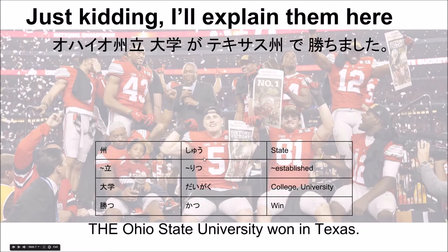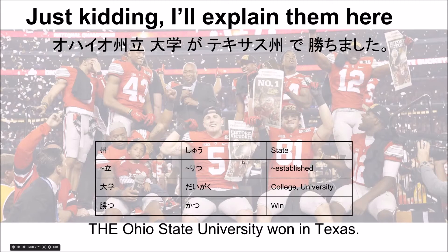オハイオ州立大学が テキサス州で 勝ちました. 州 means 'state.' 立 is read as 'ritsu' here and means 'to be established.' So オハイオ州立 means Ohio State — the university established by the state of Ohio. が marks the subject. テキサス州 で — the action didn't happen to Texas or with Texas; it happened at Texas. 勝ちました — katsu is the plain form, meaning 'to win.' The Ohio State University won in Texas.